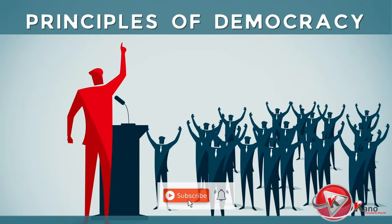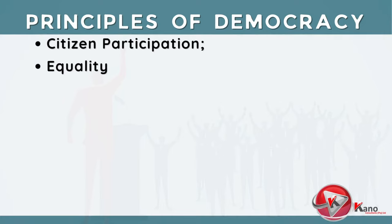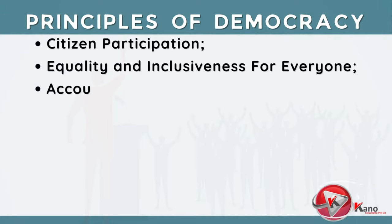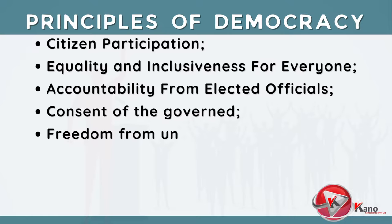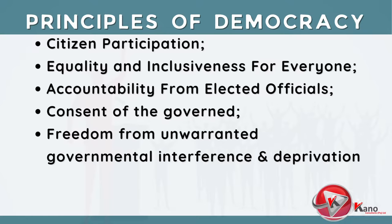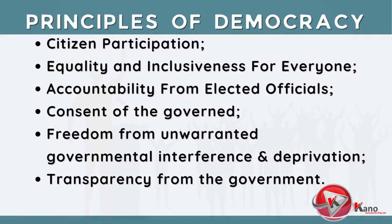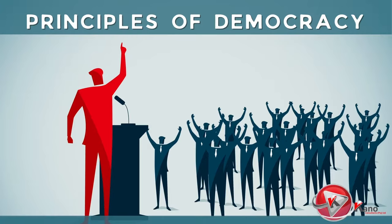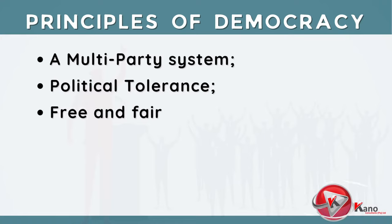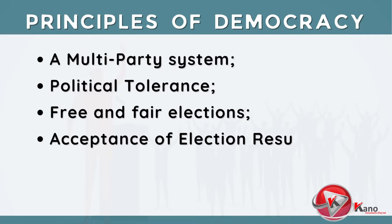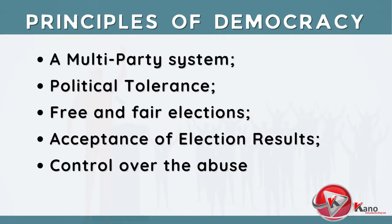Democracy is based on a number of principles. Some of the principles which form the cornerstone of democracy are: citizen participation; equality and inclusiveness for everyone; accountability from elected officials; consent of the governed; freedom from unwarranted governmental interference and deprivation; as well as transparency from the government. Other principles include a multi-party system, political tolerance, free and fair elections, acceptance of election results, and control over the abuse of power.